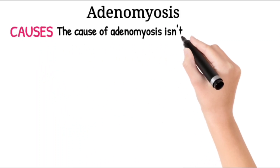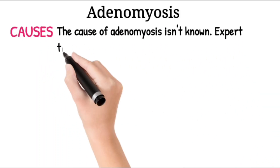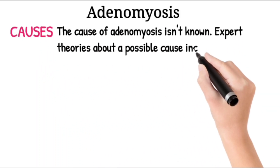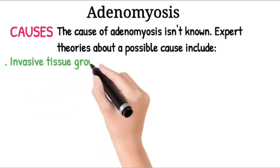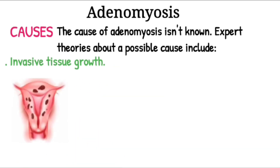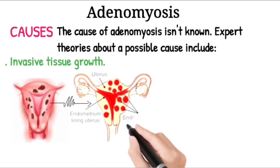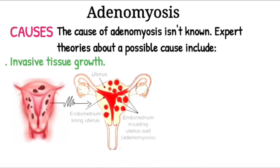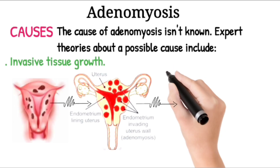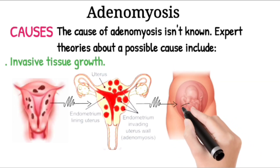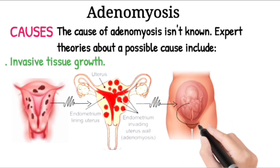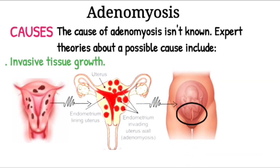Causes. The cause of adenomyosis isn't known. Expert theories about a possible cause include invasive tissue growth. Some experts believe that adenomyosis results from the direct invasion of endometrial cells from the lining of the uterus into the muscle that forms the uterine walls. Uterine incisions made during an operation such as a cesarean section (C-section) may promote the direct invasion of the endometrial cells into the wall of the uterus.